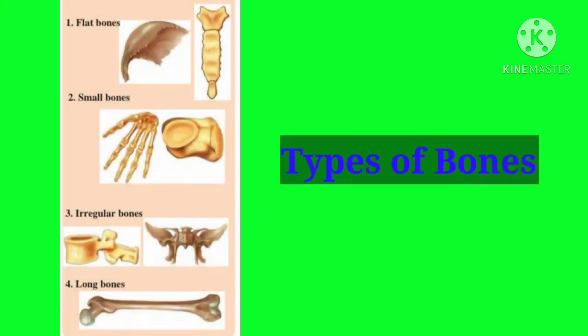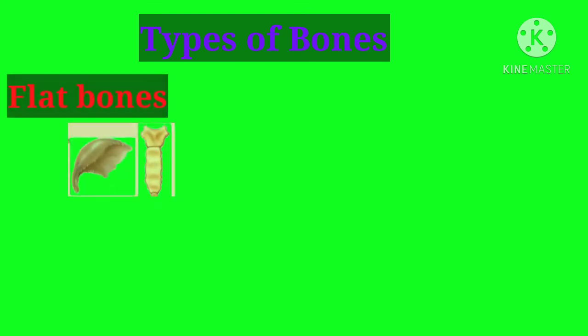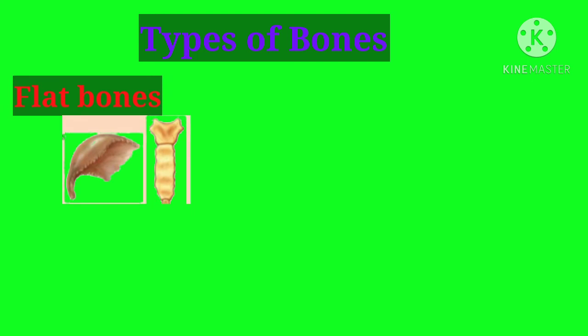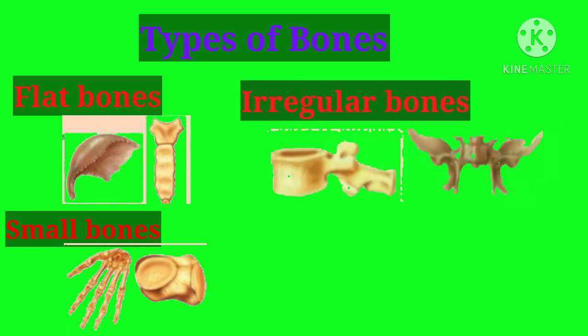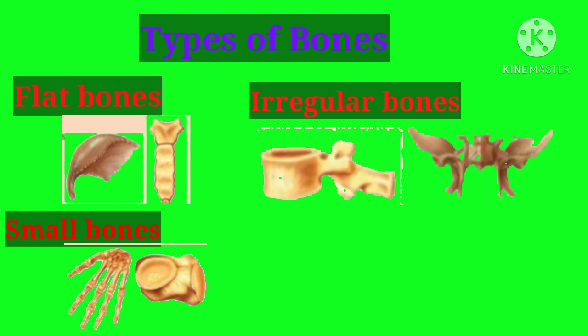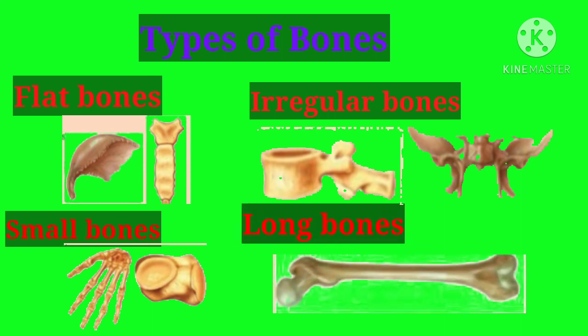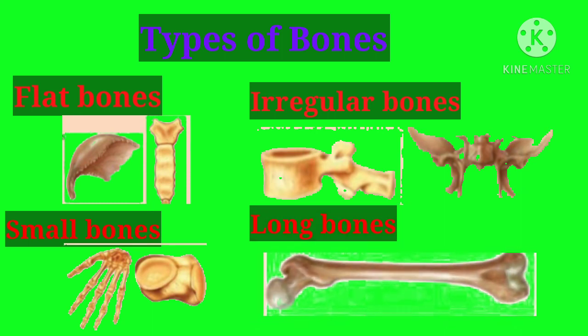The bones of our body are classified into four types. First, flat bones — these bones are flat. Second, small bones — very small in size. Third, irregular bones — their shape and size are irregular. Fourth, long bones — these bones are very long in length compared to other bones in the body.